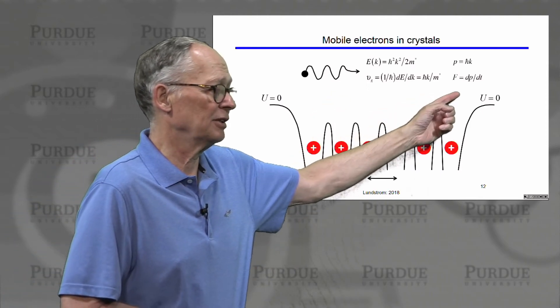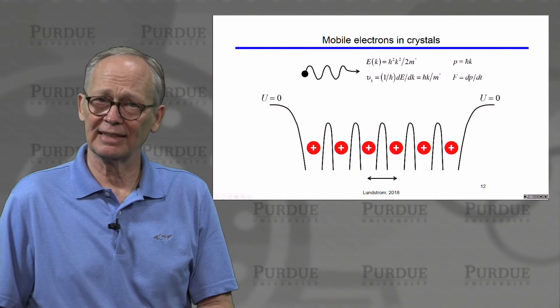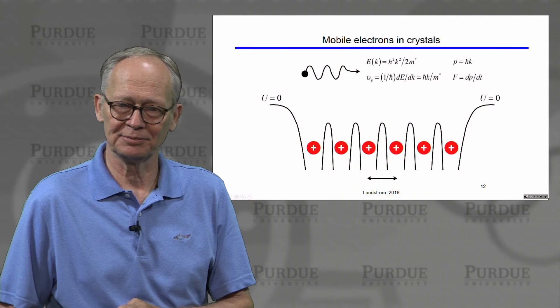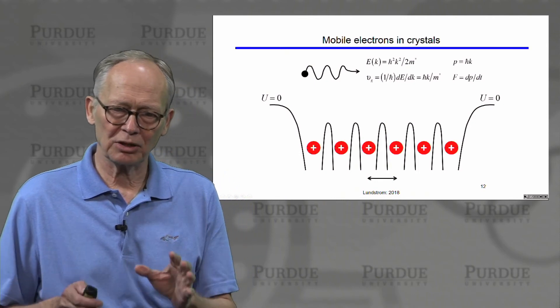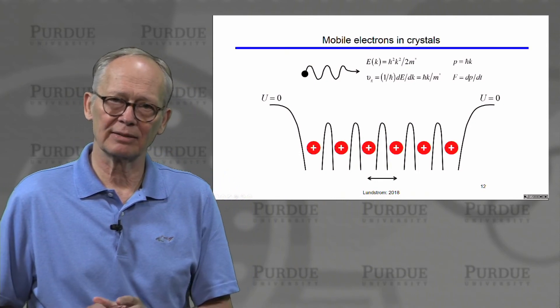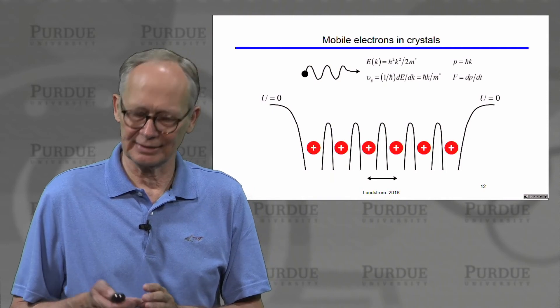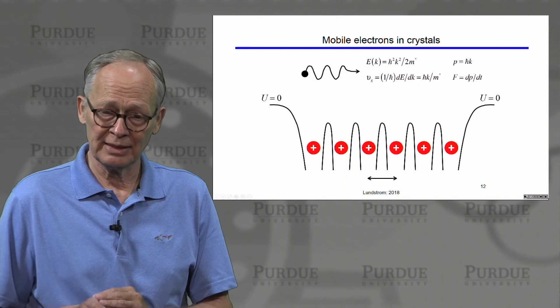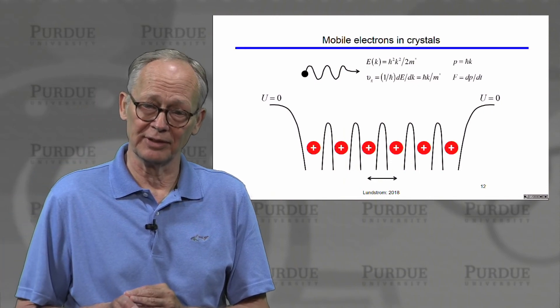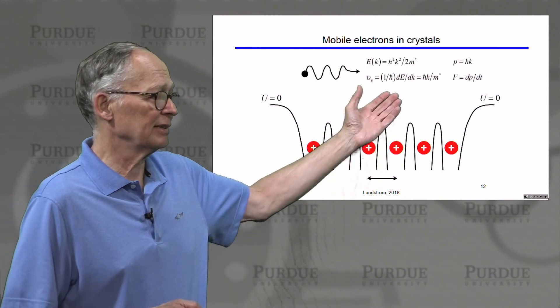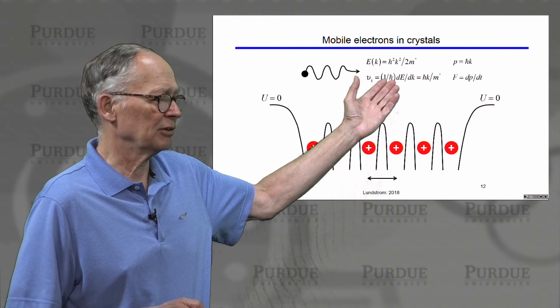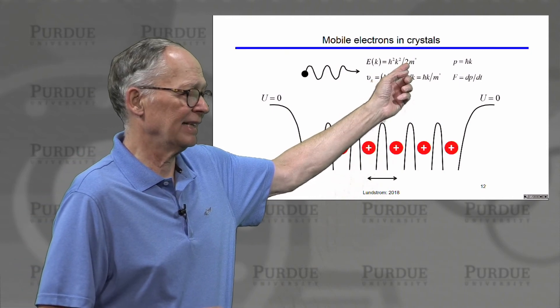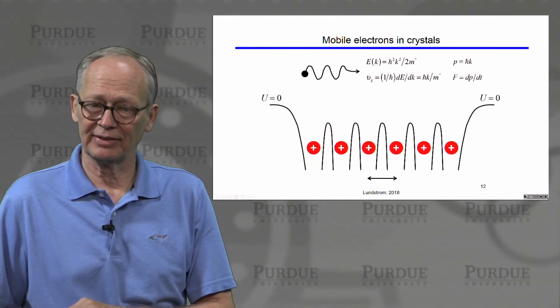And the force can be related to dp dt. Here p is not the actual momentum of the electron, it is this quantity that we call the crystal momentum. So this is a remarkably simple but effective way to treat electrons in semiconductors. And that complicated quantum mechanical problem can be really reduced to some very simple problem. When we describe electrons this way, we say that we are describing electrons as semi-classical particles. The quantum mechanics is embedded within the effective mass.